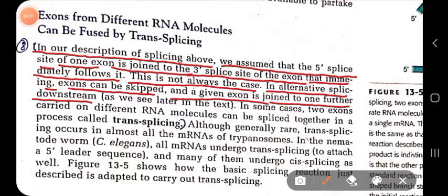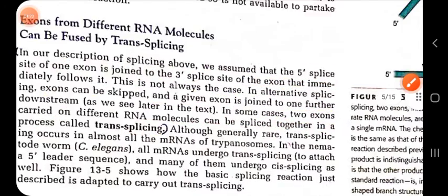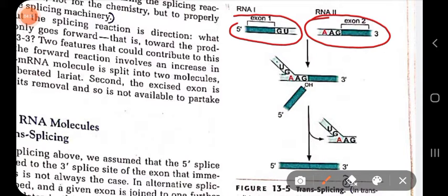In some extreme cases, two exons carried on different RNA molecules can be spliced together in a process called trans-splicing. In trans-splicing, the two exons initially found in two separate mRNA molecules are spliced together to form a single mRNA.